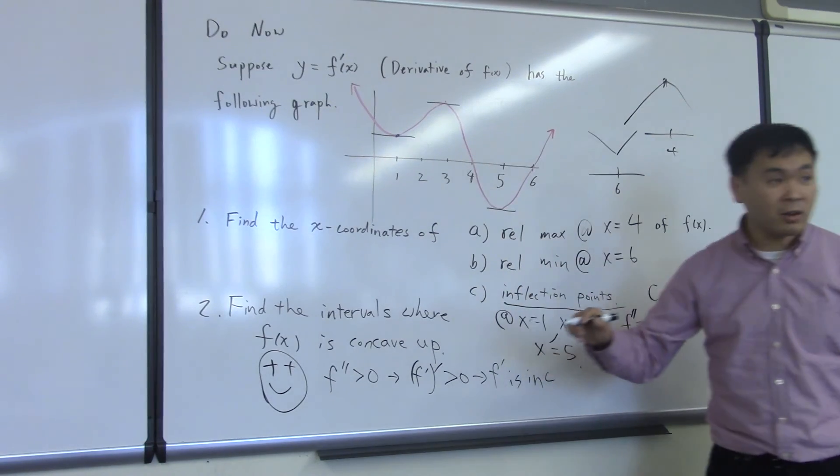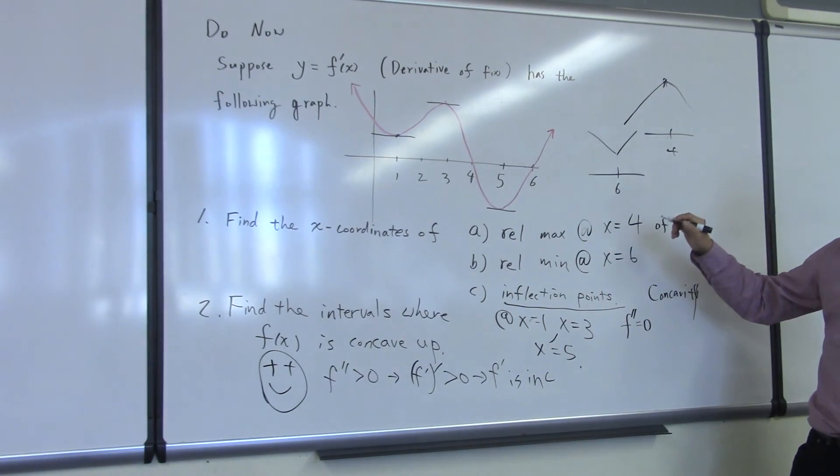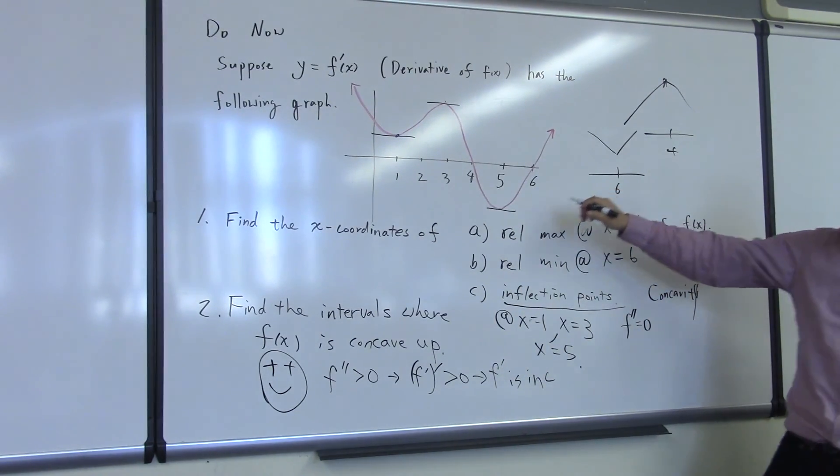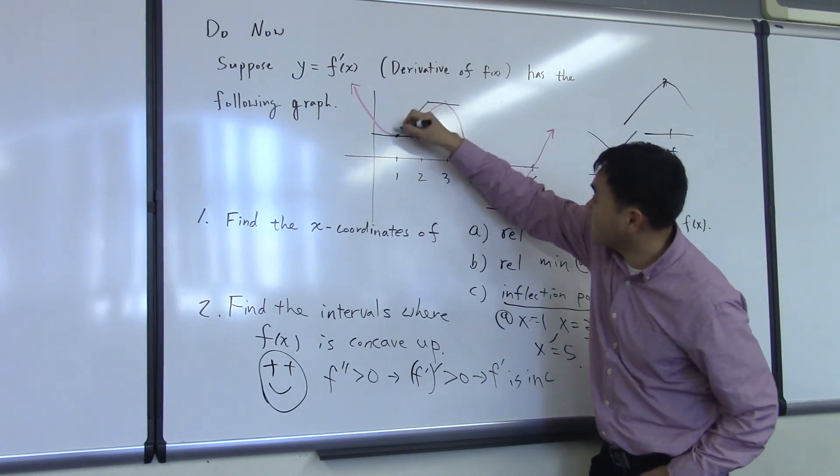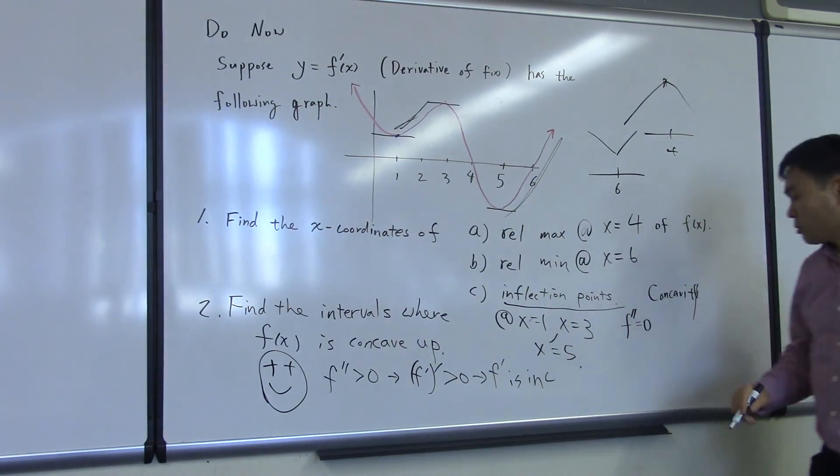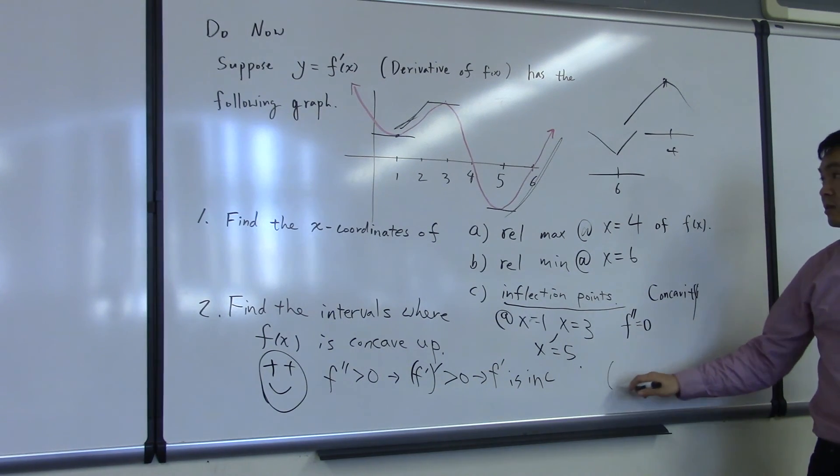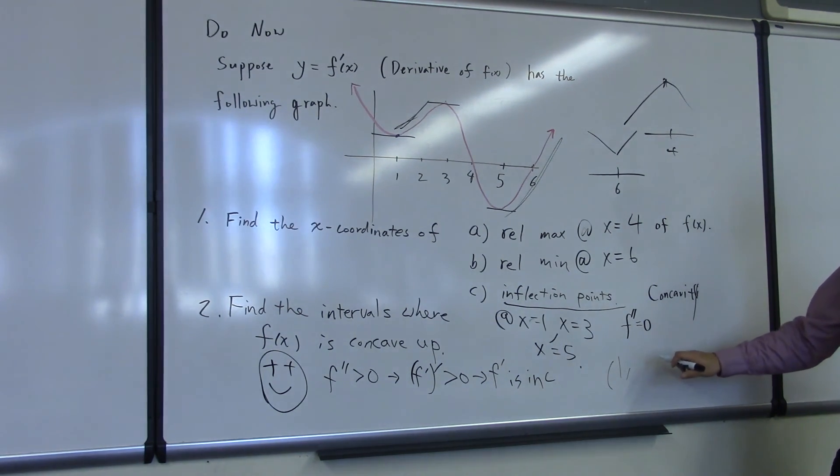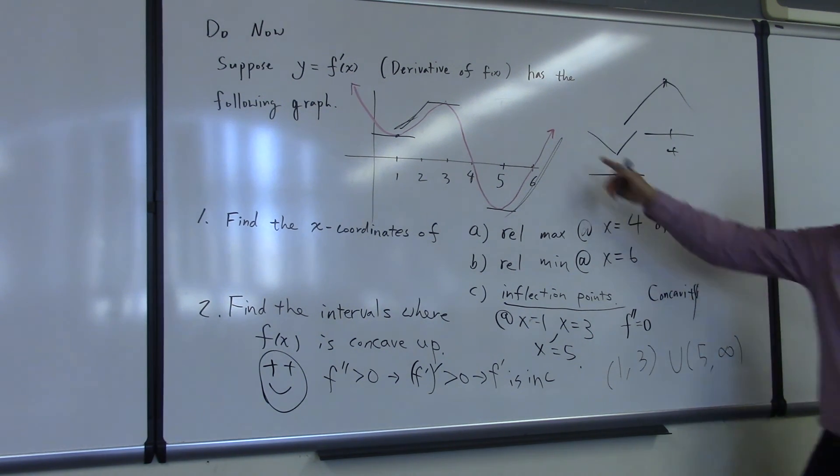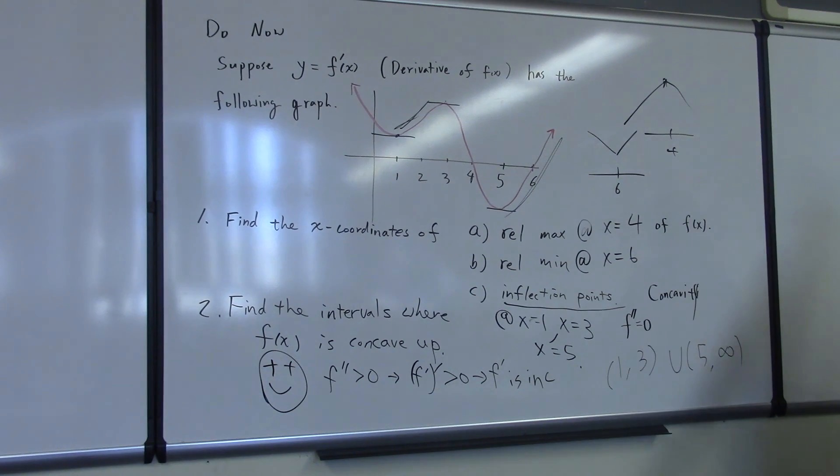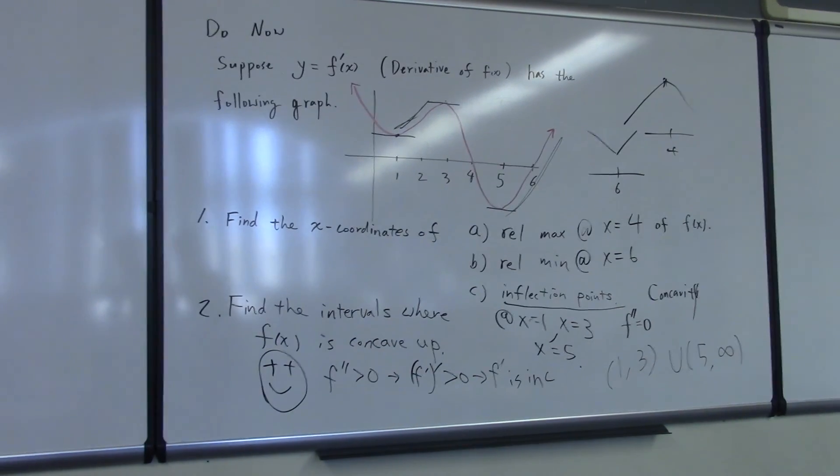So let's figure out the points where f prime is increasing. I see this part here, and there's another part here. So what is the interval? One through three. One through three, and then five through infinity, right? This arrow means that it extends in the same manner.